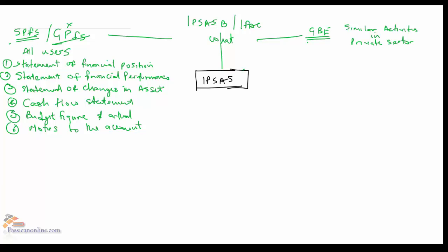So, IPSAS has also gone further to give us characteristics which an entity must have before it could be qualified as a government business entity. Now, why is it that we need to properly get this right? Because any government entity that falls under the classification of government business entity will only report using IFRS, not IPSAS. The entity must have all of the characteristics before it could be classified as a government business entity.